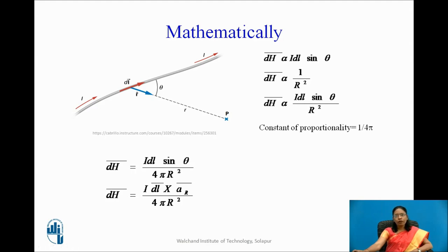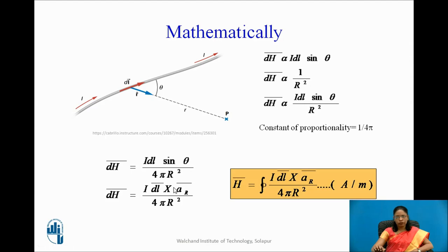Since A bar cross B bar equals the modulus of A bar times the modulus of B bar times the sine of the angle between them, I can replace I dL sin θ with I dL bar cross AR bar. For a complete length of the filament, we integrate: H bar is the closed line integral of I dL bar cross AR upon 4π R². The unit is amperes per meter. This is Biot-Savart's Law, a closed line integral considering every element of the filament.